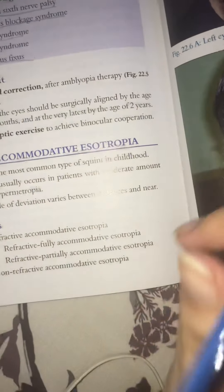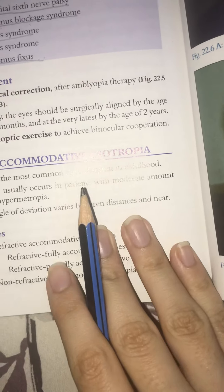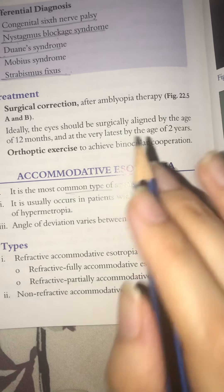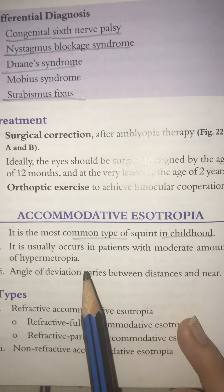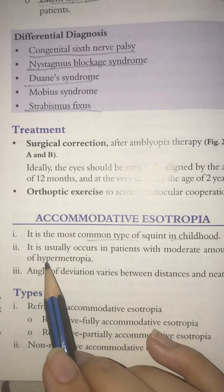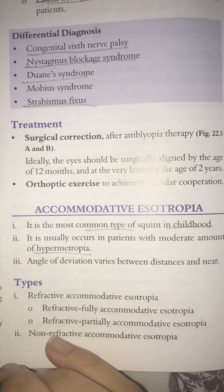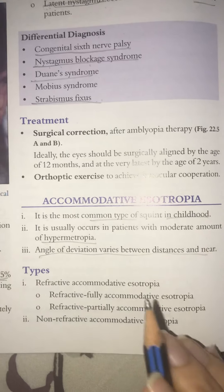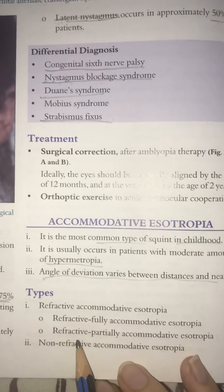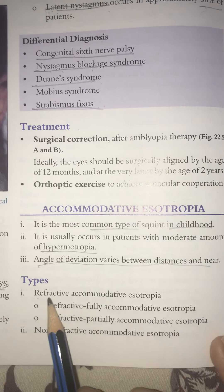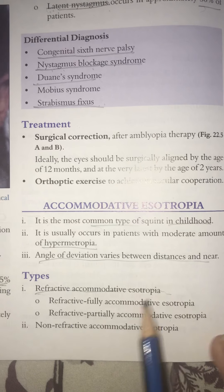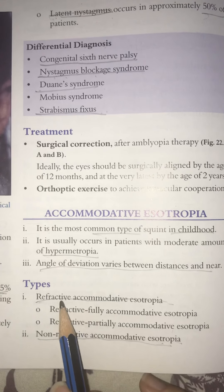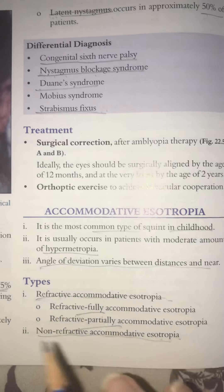If strabismus fixes spontaneously, no intervention is needed; otherwise surgical correction is done. Accommodative esotropia is the most common type in childhood, presenting between 6 months and 7 years of age in patients with hypermetropia. The angle of deviation varies and it has further subtypes.